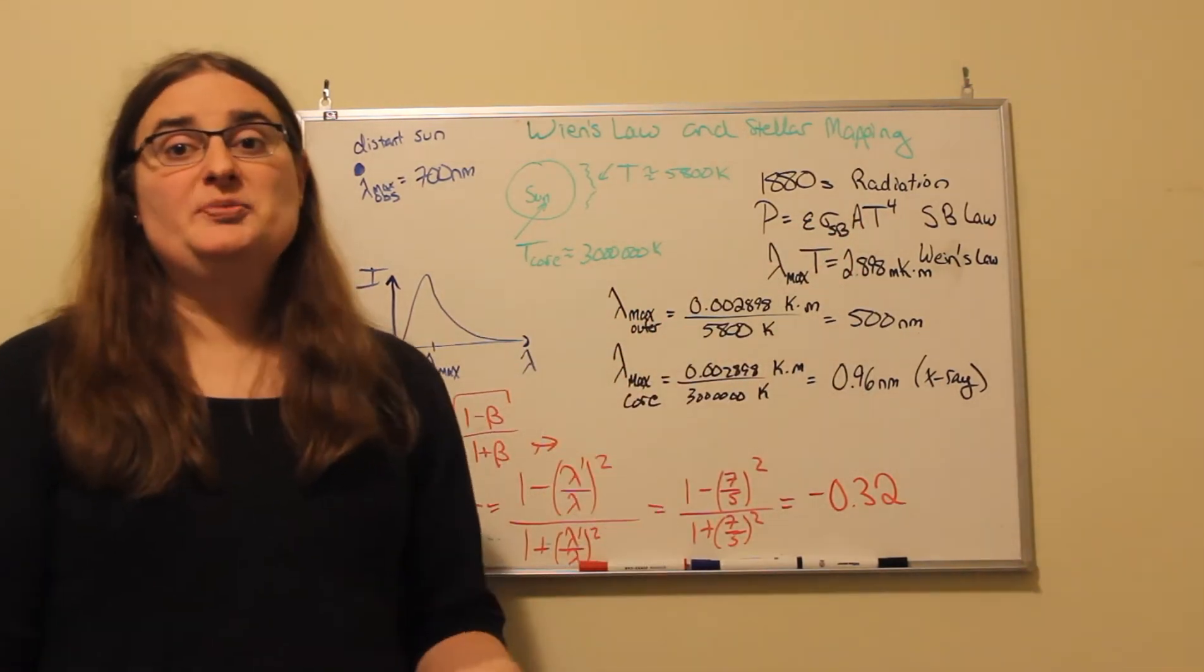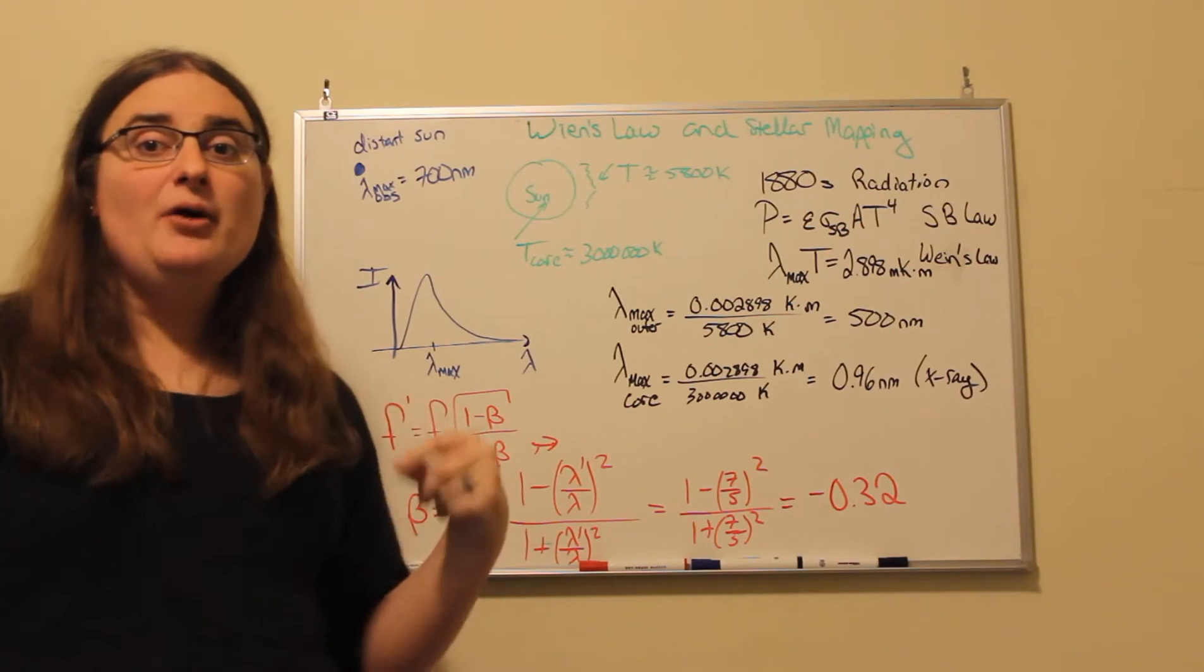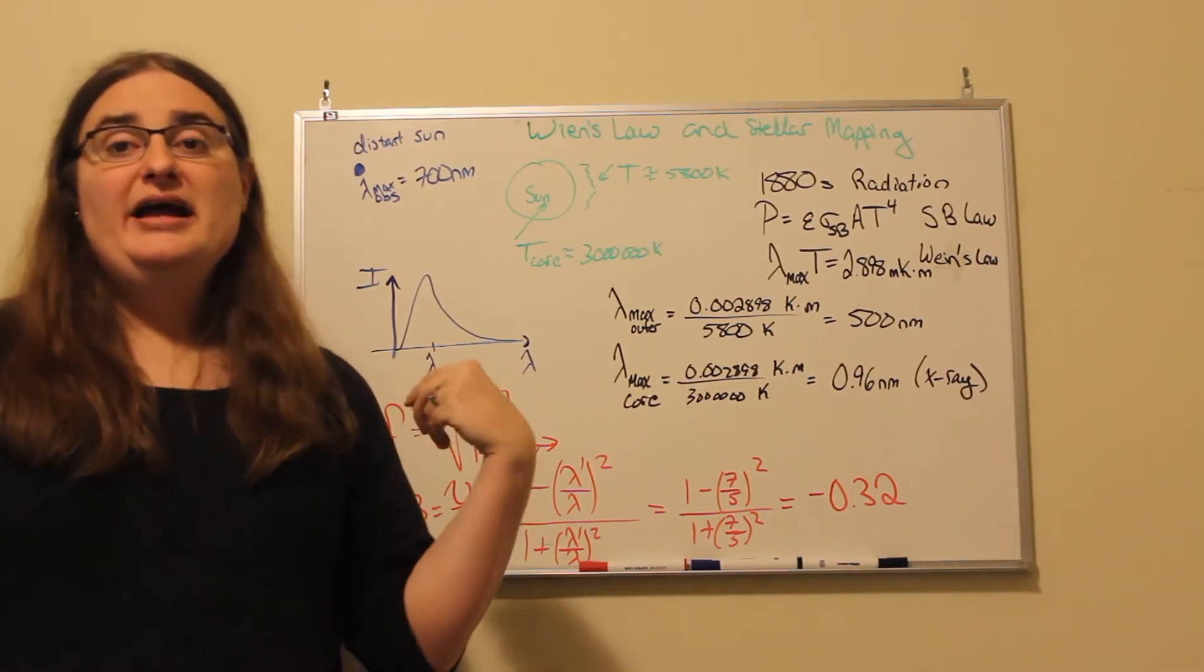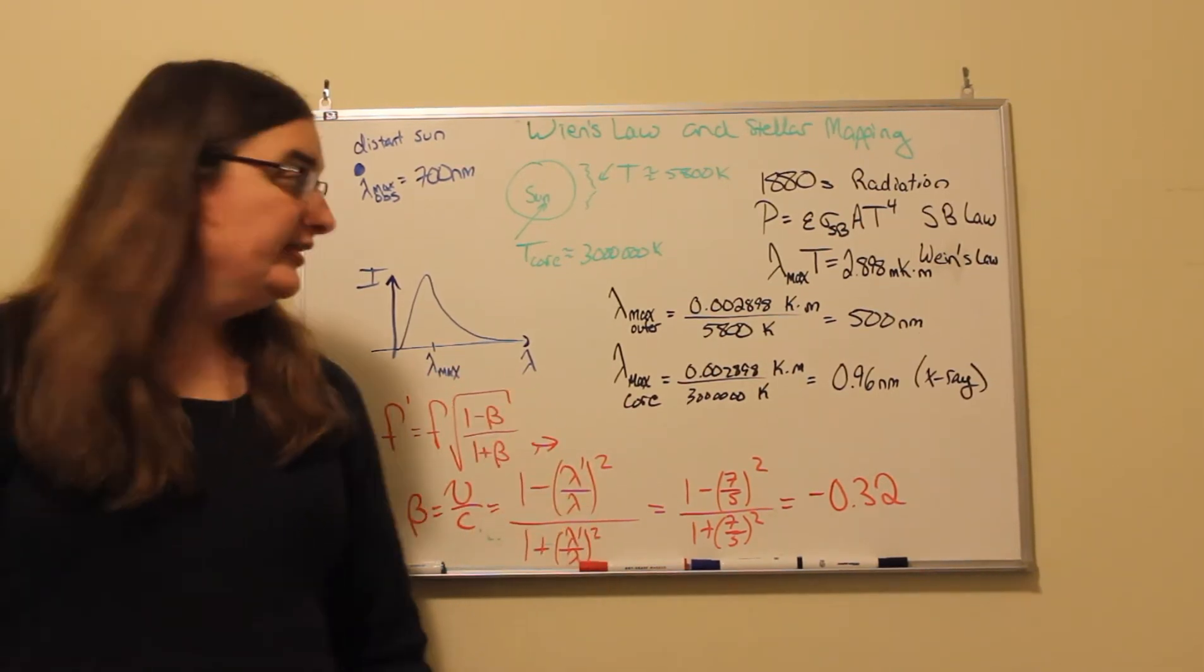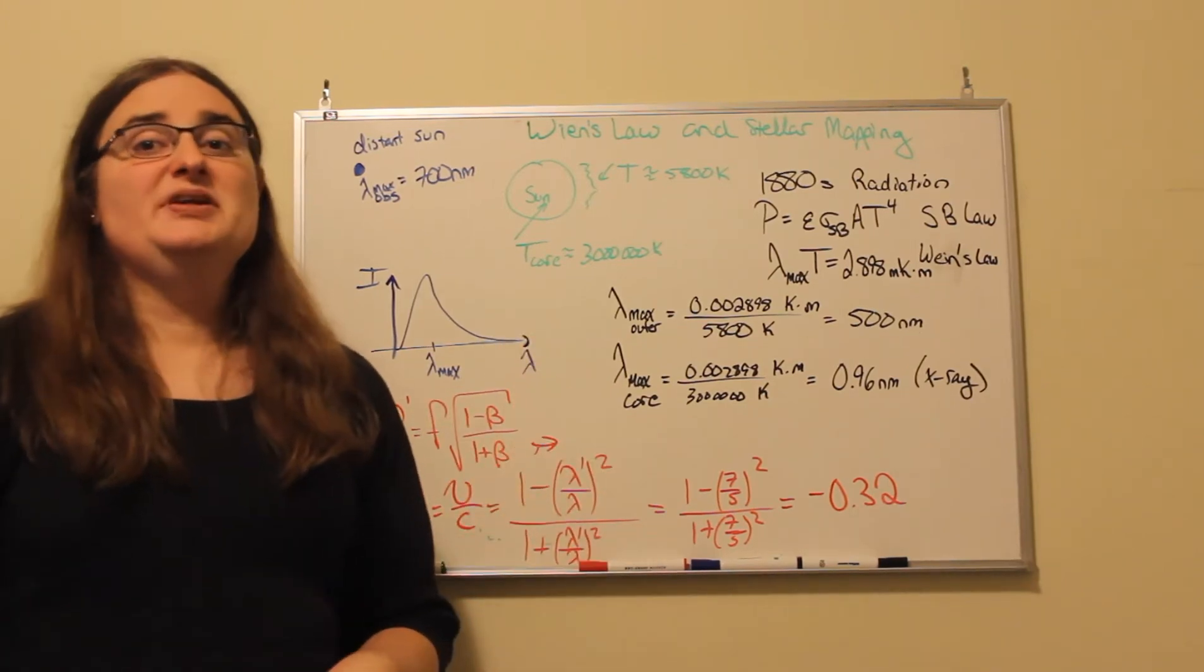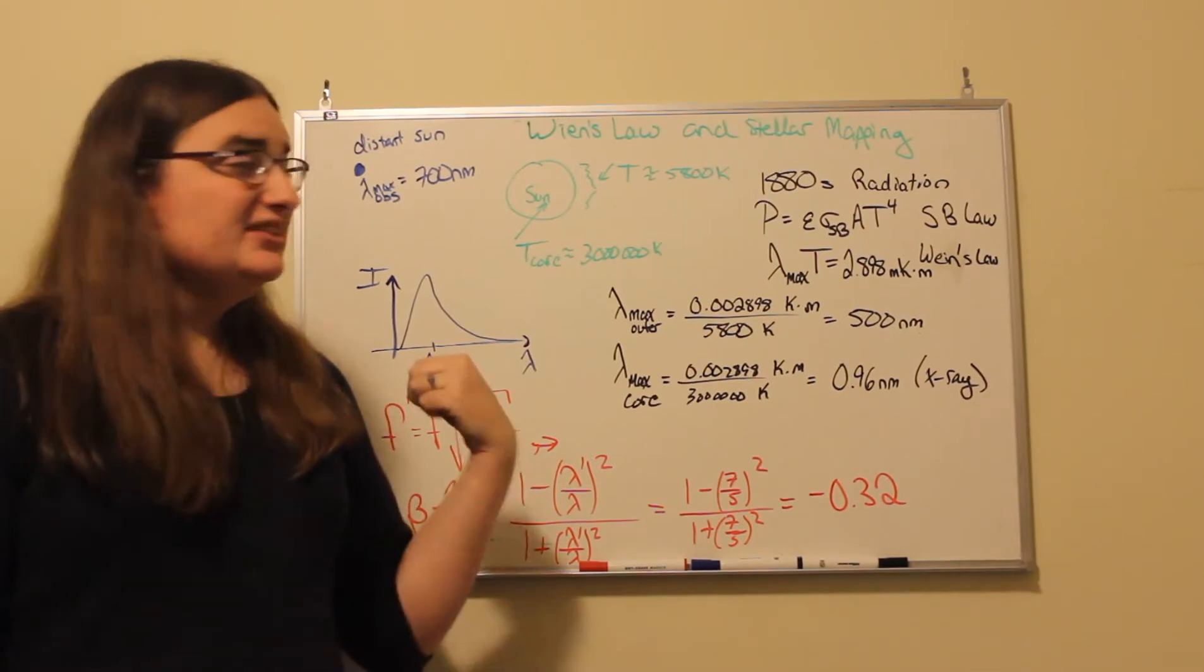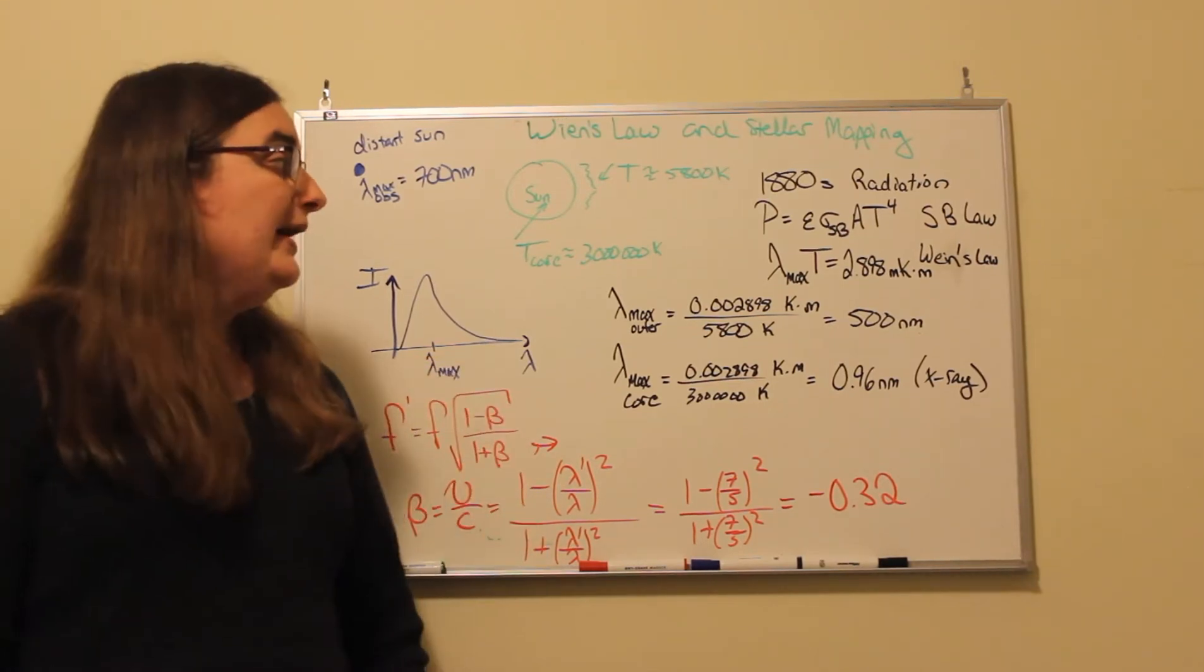The first is the Stefan Boltzmann Law, which in thermodynamics we talk about as being the power radiated by an object at a temperature. And it's equal to the emissivity times the Stefan Boltzmann constant times the surface area of our object times the temperature of our object to the fourth power.